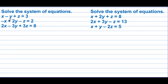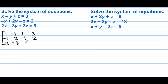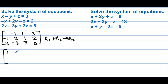Solve the system of equations. Let's write this in a matrix: [1, −1, 1 | 3], [−1, 2, −1 | 2], [2, −3, 3 | 8]. The first entry is already 1. To get a zero in the second row's first position, take row 1 plus row 2 and replace row 2, keeping all other rows the same. 1 + (−1) = 0, −1 + 2 = 1, 1 + (−1) = 0, 3 + 2 = 5.